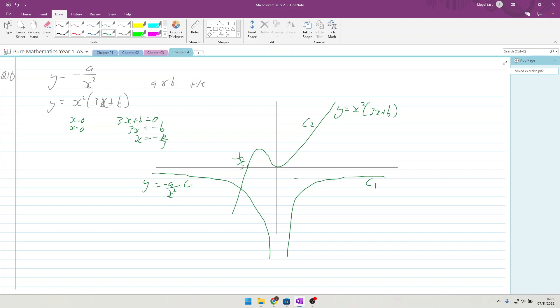Part b: use your sketch and state with a reason the number of solutions to the equation. They want to know what happens when they are equal. When -a/x² equals x²(3x + b), multiply out to get 0 equals x⁴(3x + b) + a. The solution: only one solution.